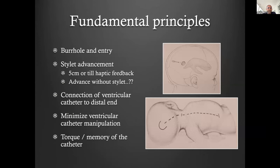Once you've done that, the burr hole and the entry — the stylet advancement. Generally the way I was taught and the way I teach our registrars is five centimeters with the stilette, and then you feed the rest with soft feedback. Once you get CSF coming back, that haptic feedback or the pop that one feels is fairly consistent. Some people advance the catheter without the stilette, which I struggle with a little bit because where the catheter ends up without the stilette to at least five centimeters is anyone's guess.